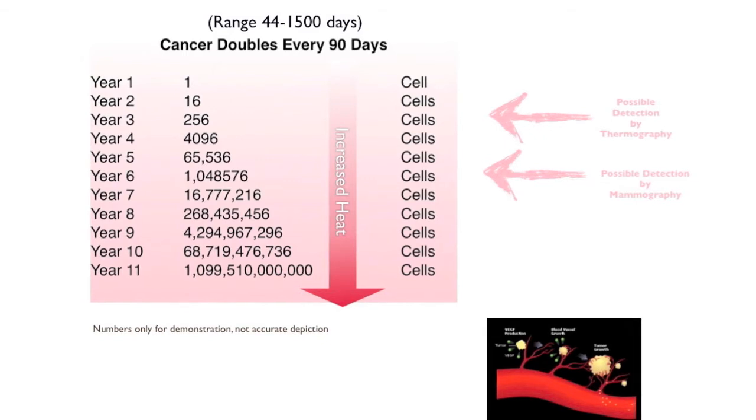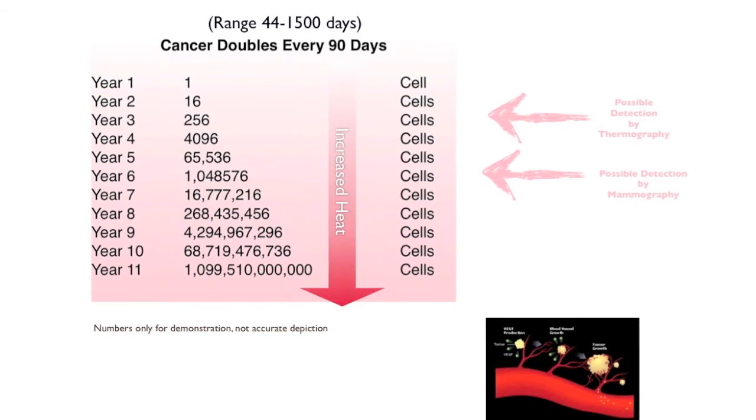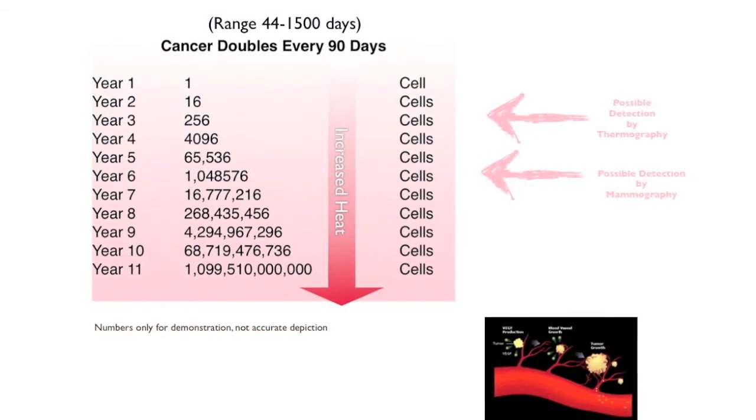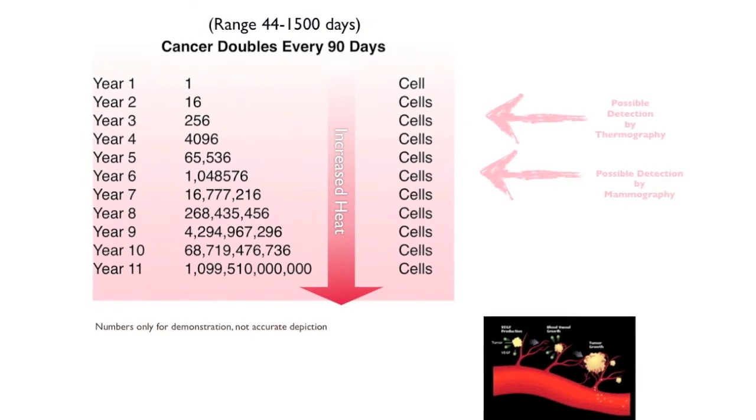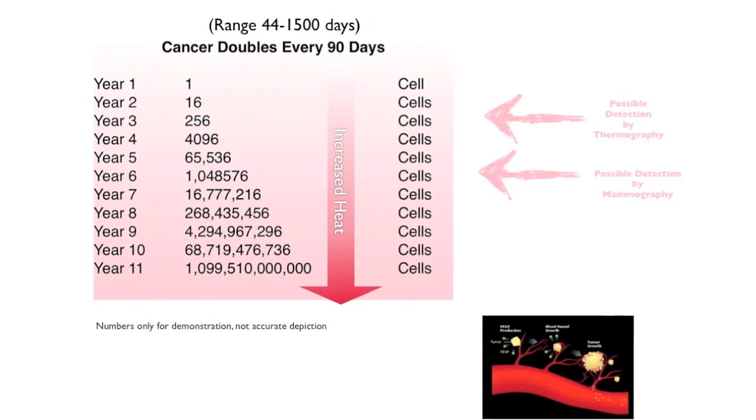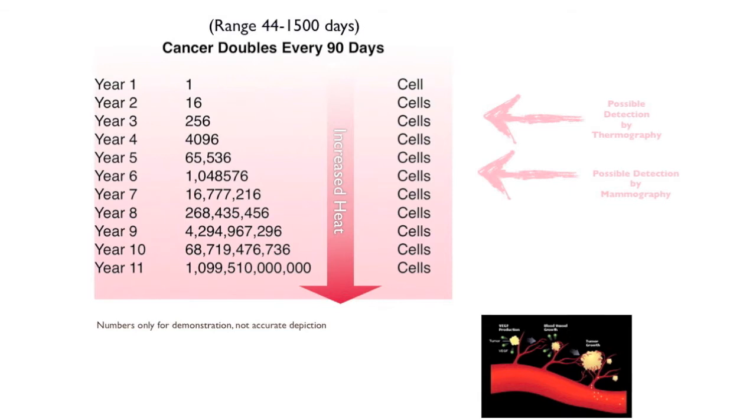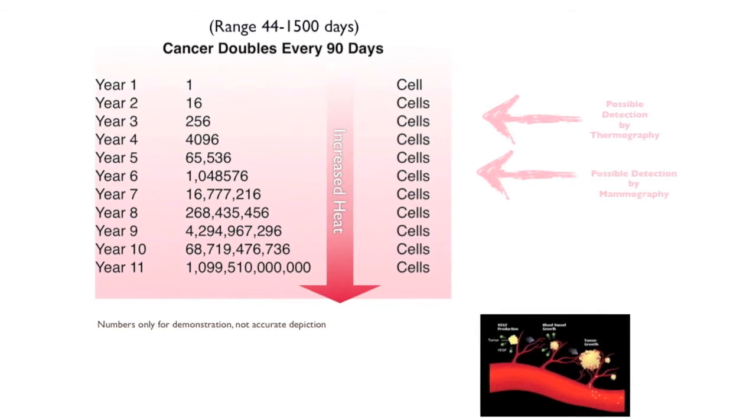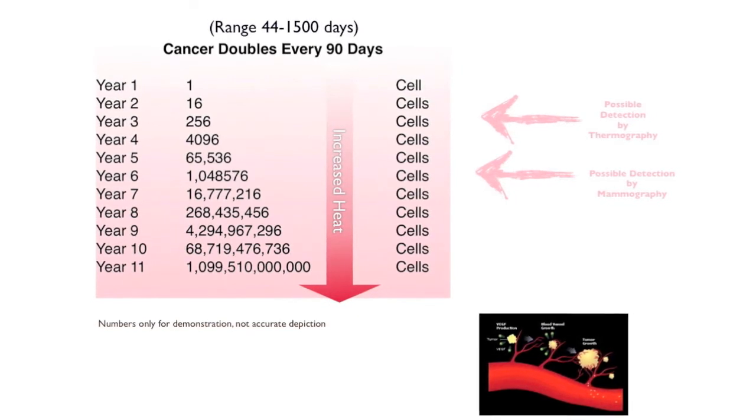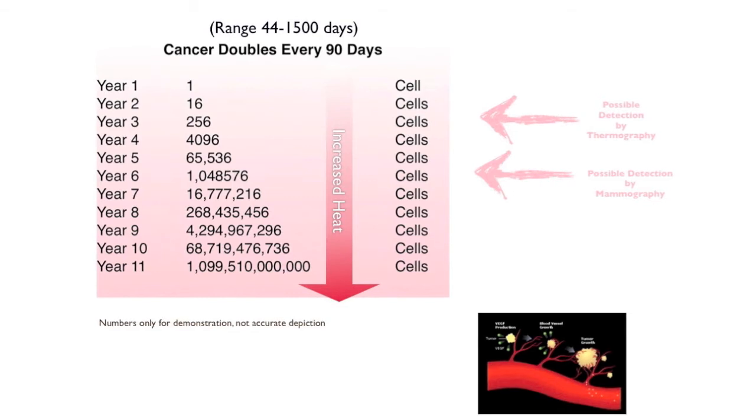So in most cases then, in a case like this, the thermography would identify the tumor growing before it actually showed up as a tumor on a mammogram, before it was an anatomical finding, when it was just physiological by giving off more heat.